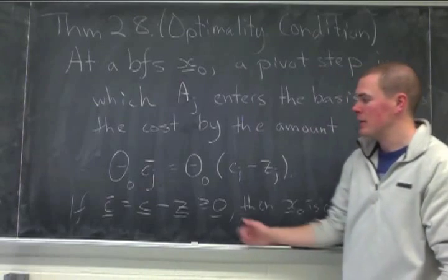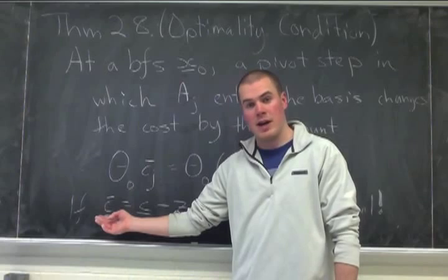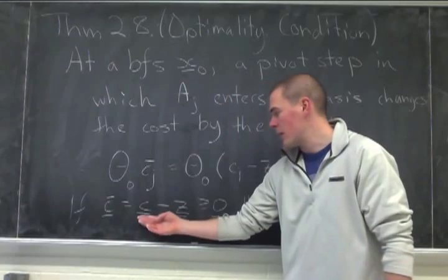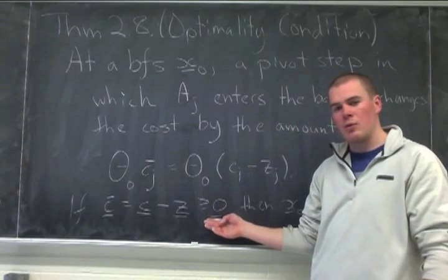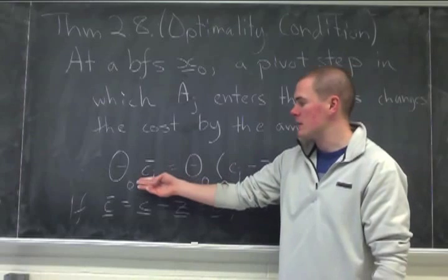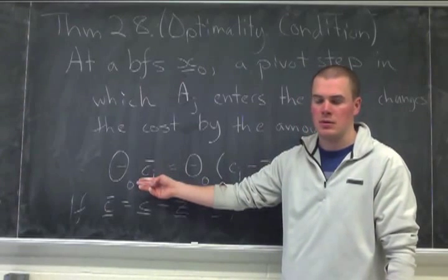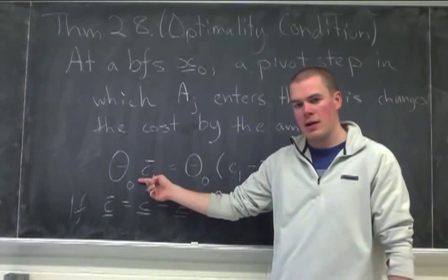Furthermore, at the very end, if I look at the relative costs as a vector of n values, well, that's equal to the cost vector minus the z vector. But if it's coordinate-wise non-negative, that means that for every j, this is a non-negative number.